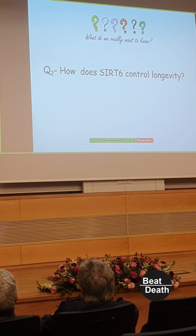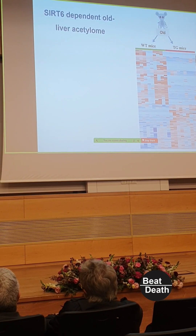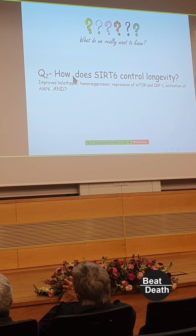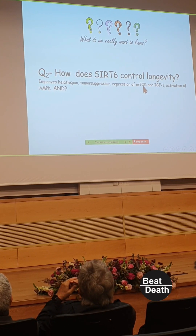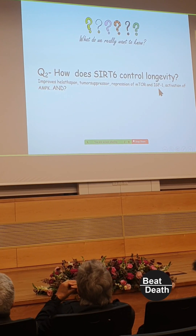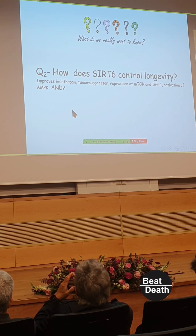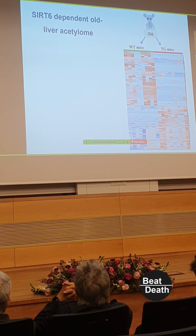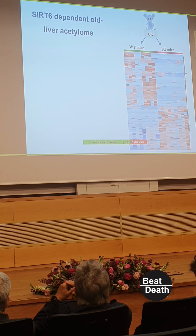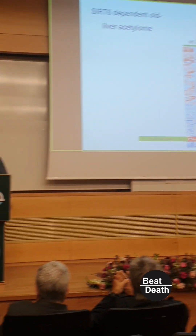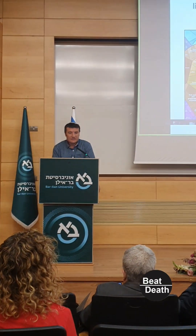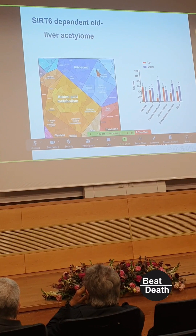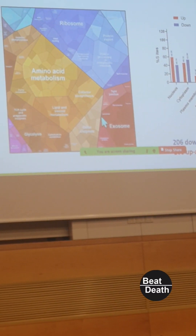How does SIRT6 control longevity? To answer this, we did many experiments. SIRT6 acts as a repressor of mTOR/rapamycin, represses IGF-1, and activates AMPK — but is this enough? To answer it, we characterized all the targets of SIRT6 in the liver: we asked which acetylated proteins have their acetylation status changed because of SIRT6. The results show regulation of amino acid metabolism, ribosome activity, and exosomes, among other pathways.